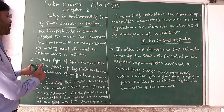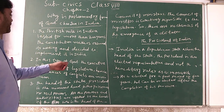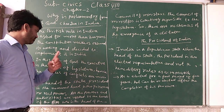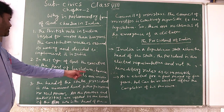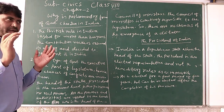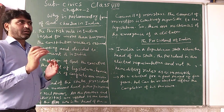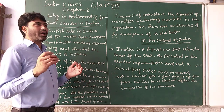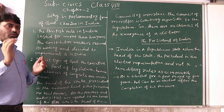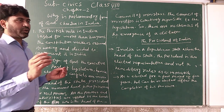The second point: in this type of government — in the parliamentary form of government — the executive is part of the legislature. Hence, the chances of conflicts are minimum. Parliamentary form of government means that the executive is part of the legislature. In the legislature, the executive, for example ministers, are also members of parliament and part of the legislature.